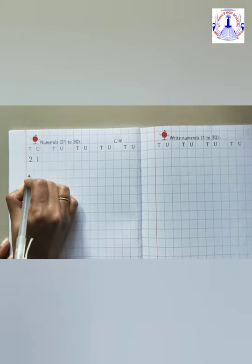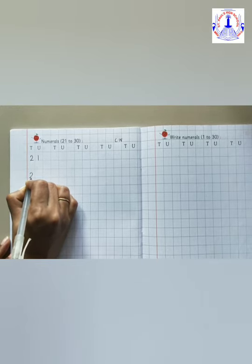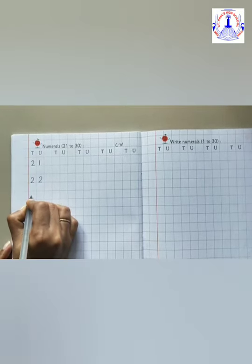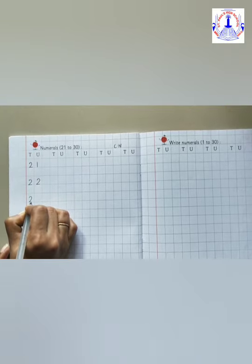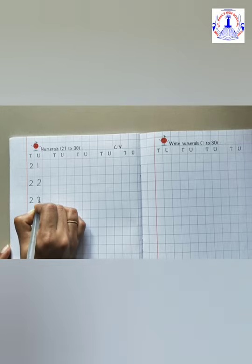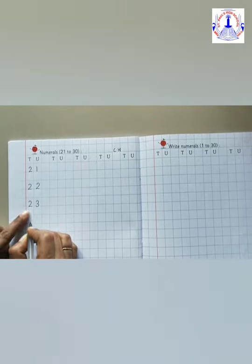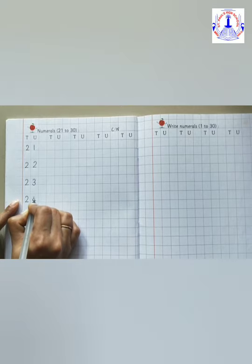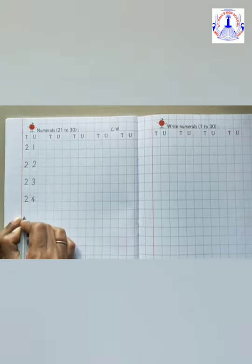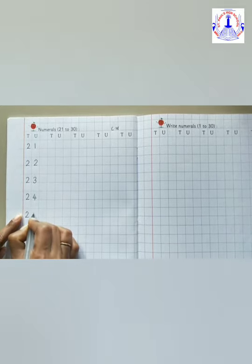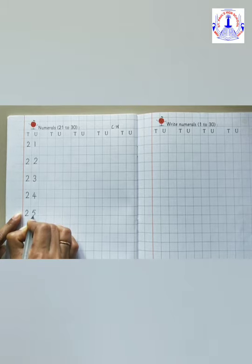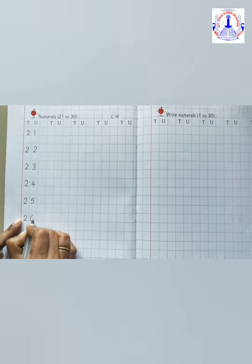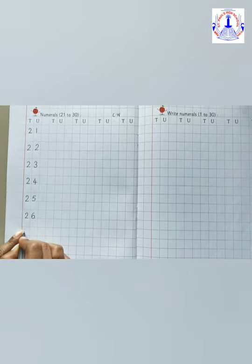After number 21, which number children? 22. Leave one box. After number 22, 23. Leave this box, 24. Leave one box. After number 24, 25. After number 25, 26.